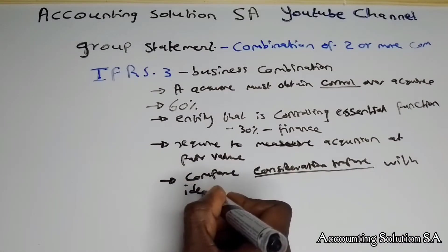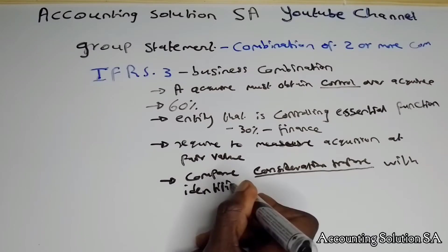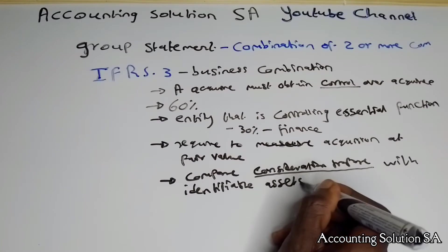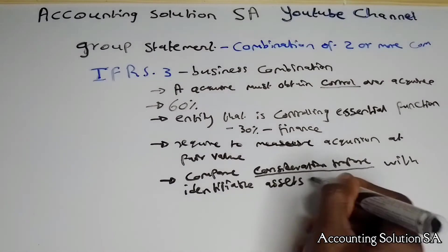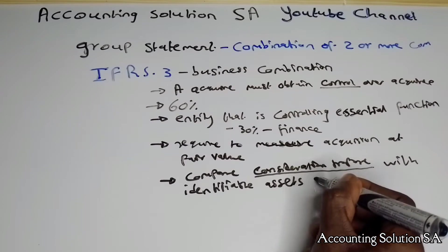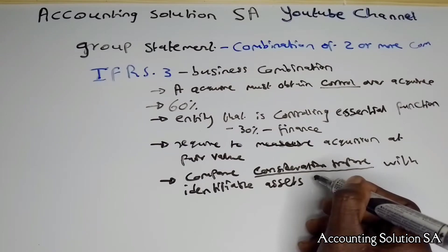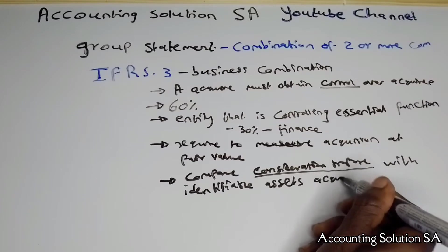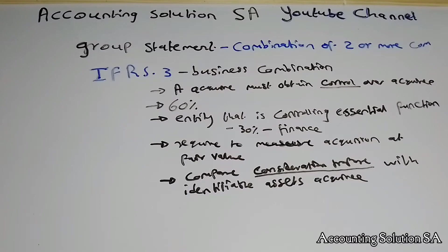We compare the consideration transferred with the identifiable assets — in other words, we have to compare it with the net assets of the acquiree — so that we can check whether we have obtained a gain from bargain or goodwill. Remember, we only do goodwill under IFRS 3.